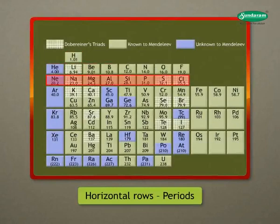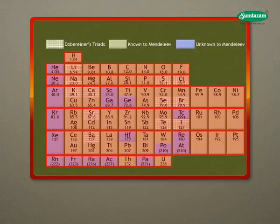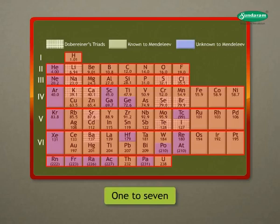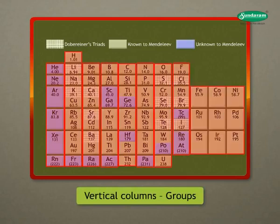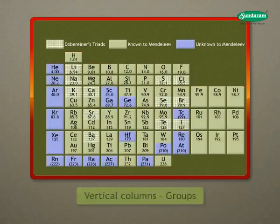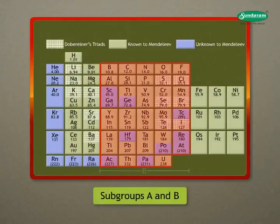The horizontal rows in the periodic table are called periods. There are seven periods, numbered from one to seven. Properties of elements in a particular period show regular gradation from left to right. The vertical columns in the periodic table are called groups. There are eight groups, numbered from one to eight. Groups one to seven are divided into A and B subgroups.